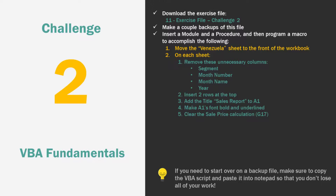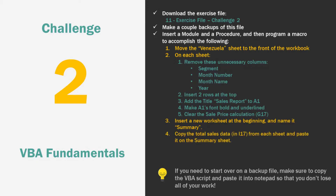After that, we're going to insert a new worksheet at the very beginning and name it Summary. And then we're going to copy the total sales data from each sheet — which is in I17 of each sheet, by the way — and paste it on the Summary sheet. Once you've done that, we're going to add a title to the Summary sheet and add some simple labels for the data.